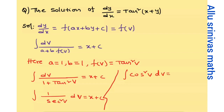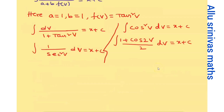We know that 1 over sec squared v equals cos squared v, so we integrate cos squared v dv equals x plus c. For cos squared v, using the trigonometric formula: (1 plus cos 2v) by 2. So the integral of (1 plus cos 2v) by 2 dv equals x plus c. Taking the constant 1/2 outside, integration gives v plus sin 2v over 2 equals x plus c.